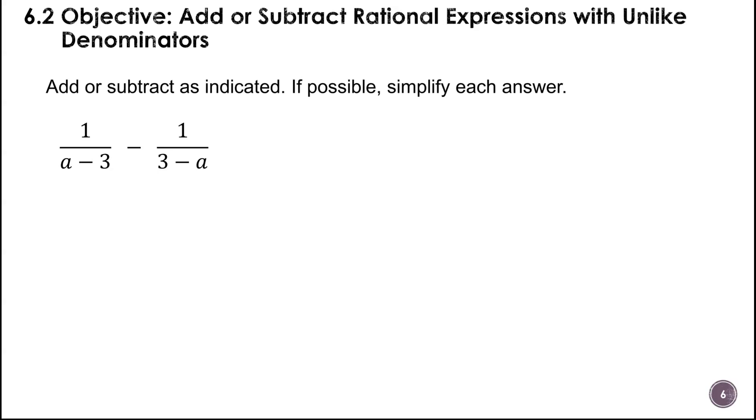This is one of those where we have a denominator where one is the opposite of the other. A minus 3 and 3 minus A are opposites. I can rewrite one of them to equal the other one by just using a negative 1.